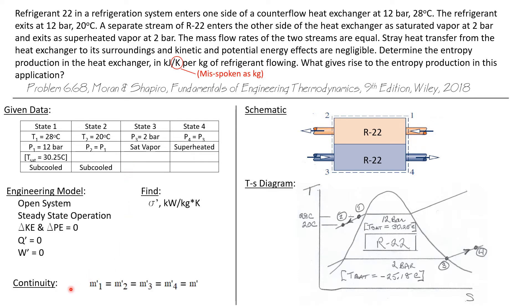Our continuity equation gives M dot one equal to M dot two for one side of the heat exchanger, and M dot three equal to M dot four for the other side. We were told the mass flow rates through both sides are the same, and we'll just call it M dot.